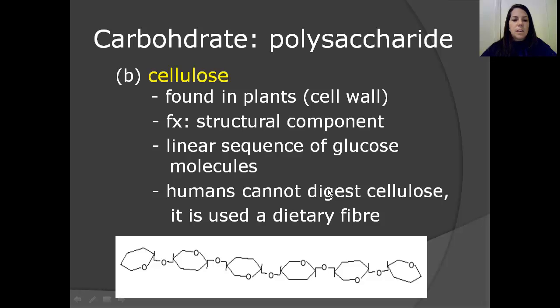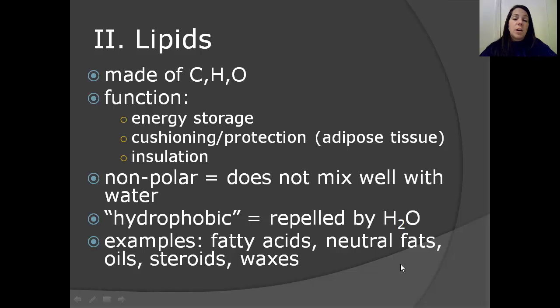And finally, cellulose is found in plants in the cell wall. And its function is not energy storage, but it is a structural component. So, it helps support that cell wall and make it strong for the plant to be able to stand upright. Its characteristic, if you're looking for it, is a linear or straight sequence of glucose molecules with no branching. And the other quick fact about this is that humans cannot digest cellulose. It is used as a dietary fiber in facilitating digestion in the colon area.